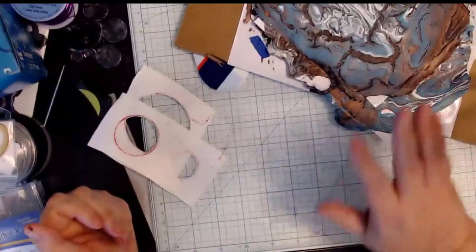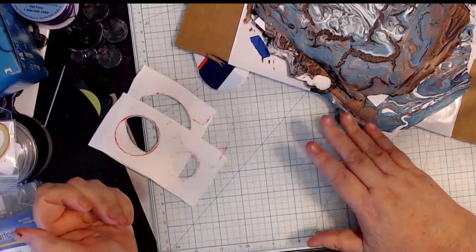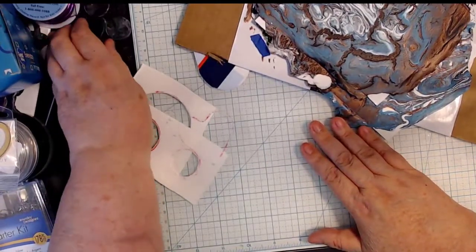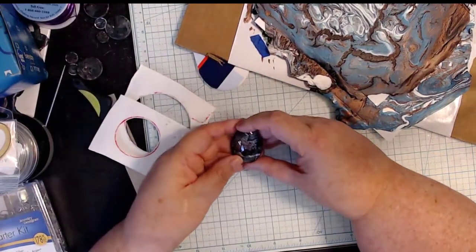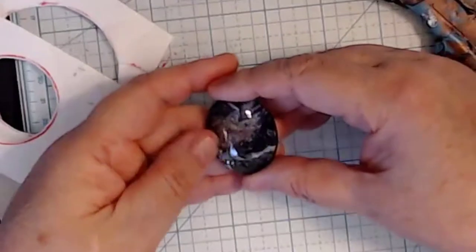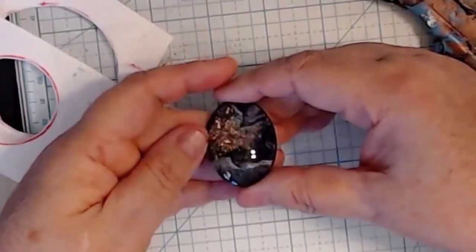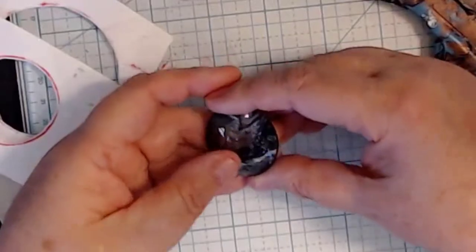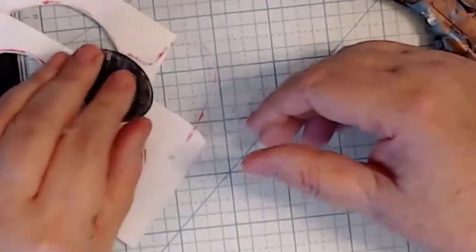The other thing you can do to create jewelry with acrylic pours is you can actually dip, you can buy these glass cabochons, you can get them in all kinds of different shapes and sizes of course and you can dip them.